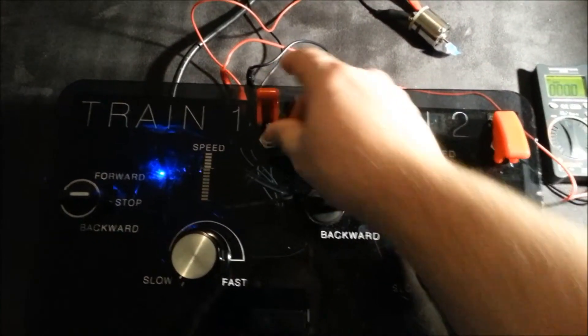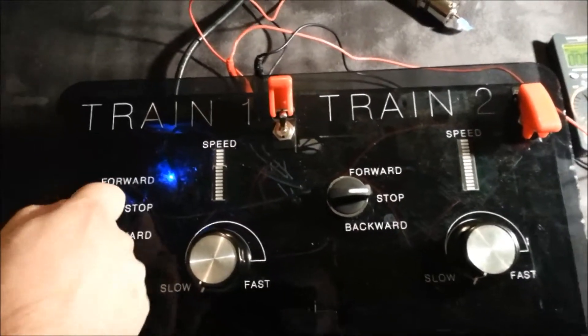This is the e-stop switch. You can change the direction of the train to forward.